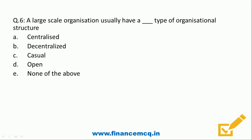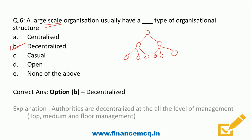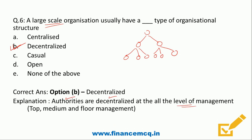Question 6: A large-scale organization usually has a dash type of organizational structure. A) Centralized, B) Decentralized, C) Casual, D) Open, E) None of the above. Since it's a big organization, a single person cannot take all decisions. It needs different people to take decisions and run the organization. So the correct answer is Option B, Decentralized. Authorities are decentralized at all levels of management — top, middle, and floor management levels.